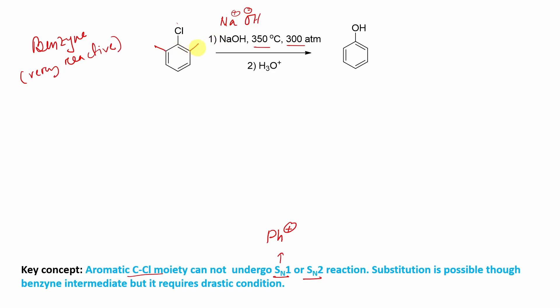So here one of the ortho hydrogens will be abstracted by this OH minus and it will generate a carbanion. So the negative charge is on this SP2 hybridized orbital. This orbital is SP2 hybridized. In the next step, what happens? It produces benzyne.